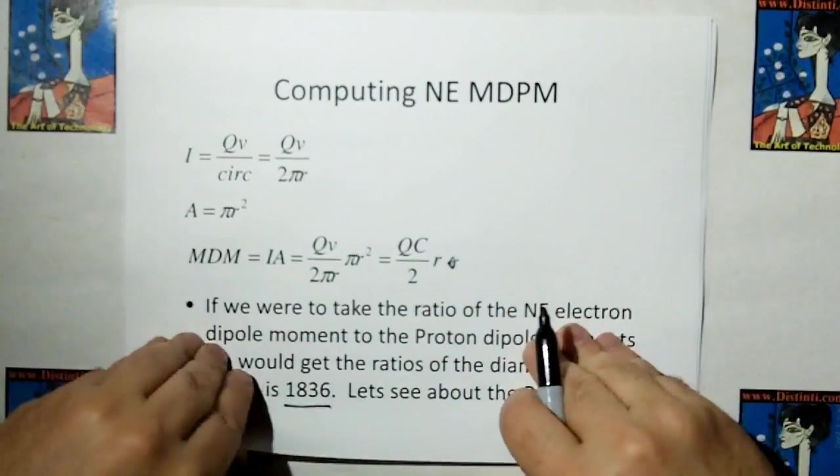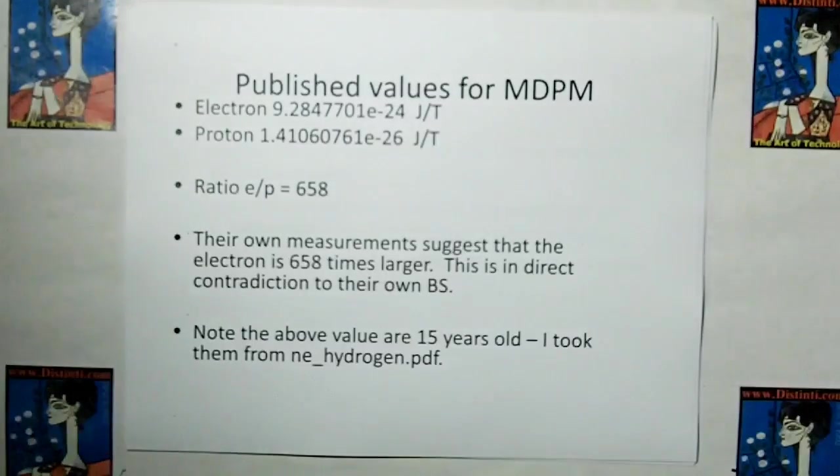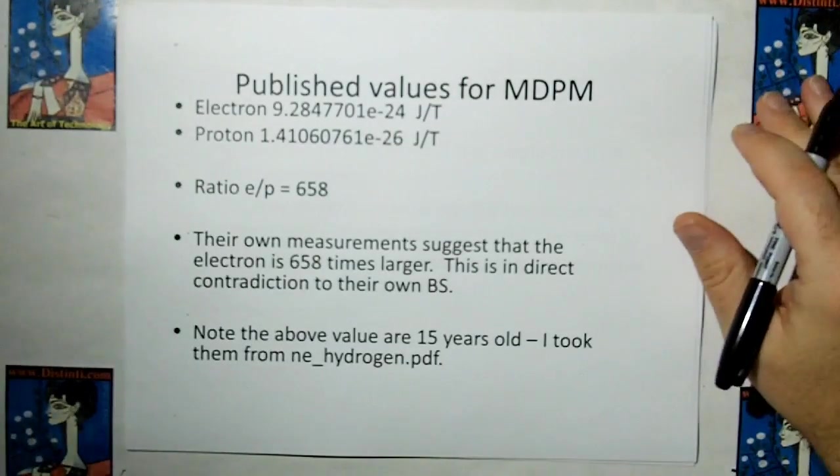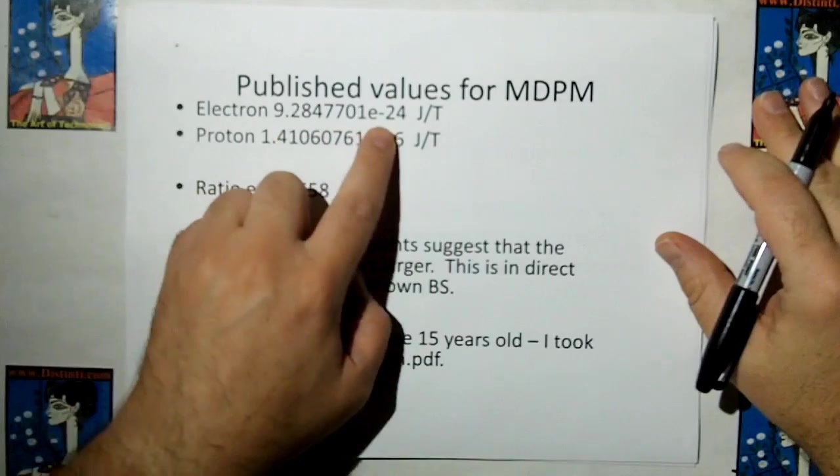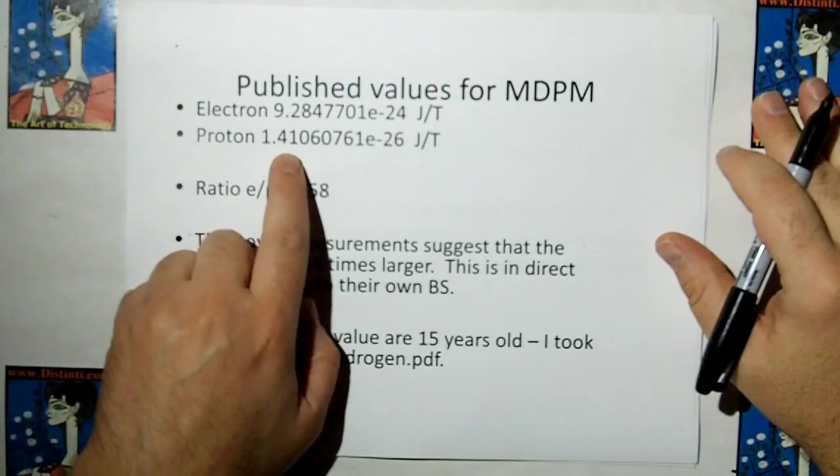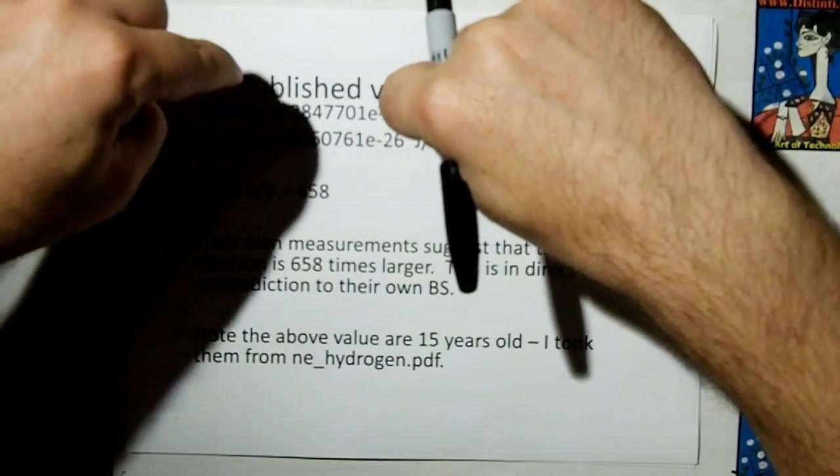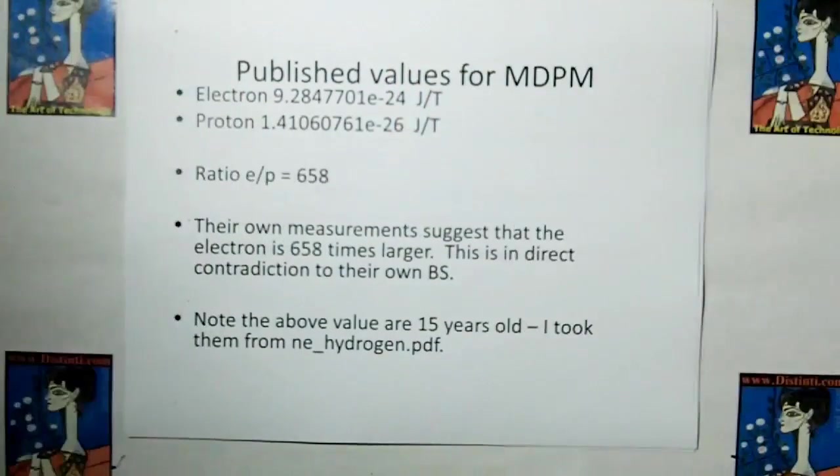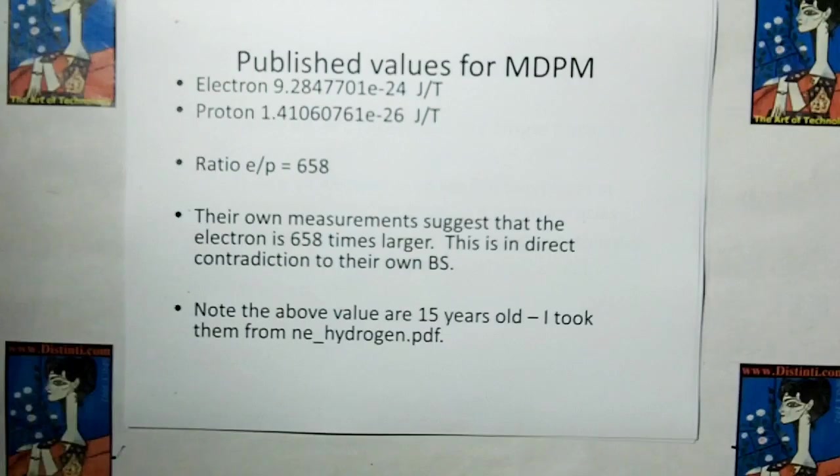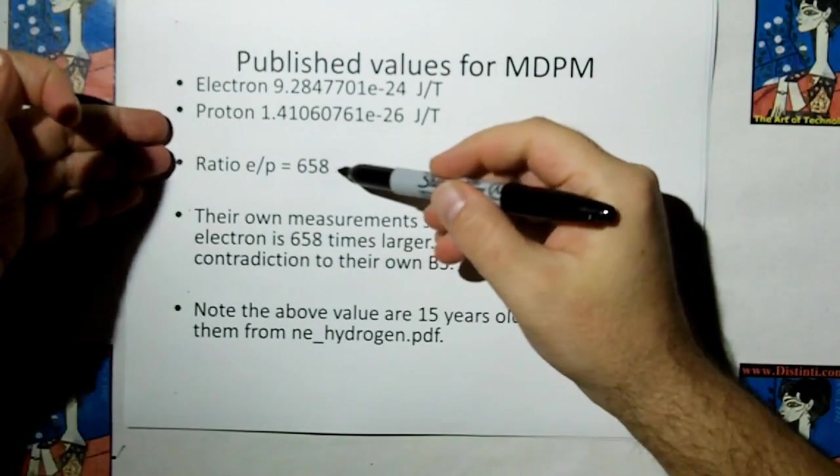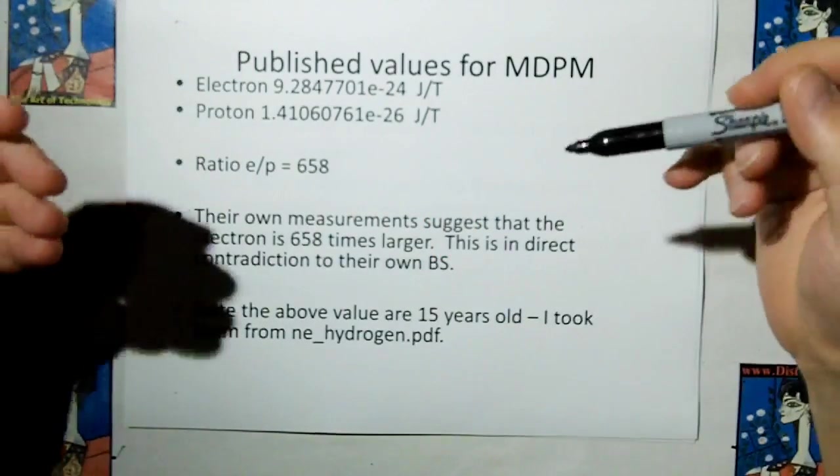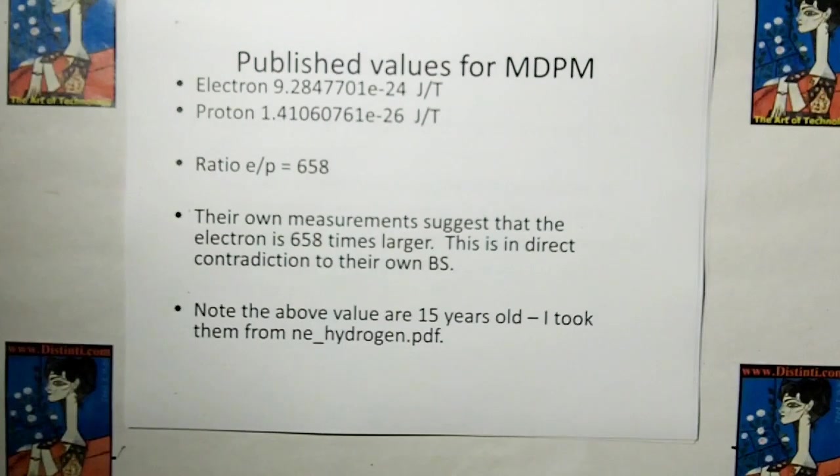Well, let's look at the real ones. The published value of the electron dipole moment is 9.2 times 10 to the minus 24. The proton is 1.41 times 10 to the minus 26. The electron dipole moment is bigger than the proton dipole moment. The ratio is 658. Their own measurements suggest that the electron is at least 658 times larger. This is in direct contradiction to their own bullshit.